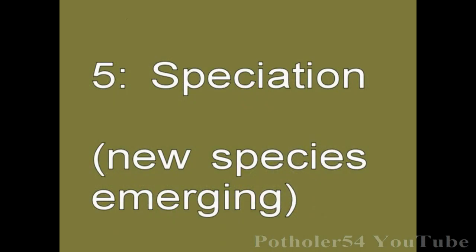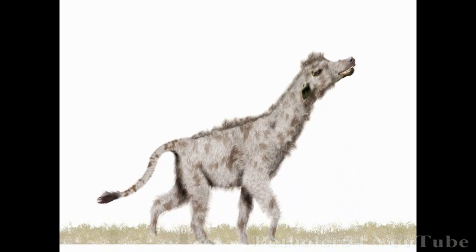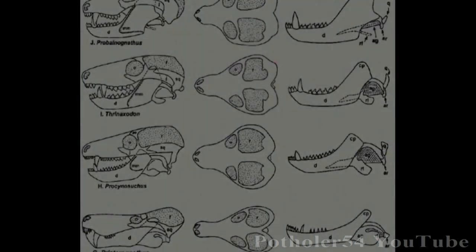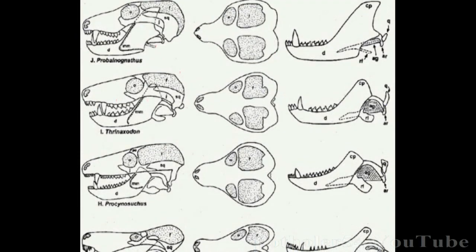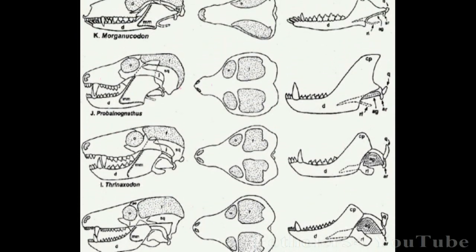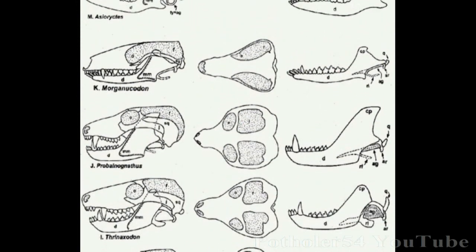In the video on natural selection, I showed how a hypothetical animal might evolve into two different species. At first, the two types would be able to reproduce, then reproduce with difficulty, and then not reproduce at all. We can't watch it happening in mammals today, because it takes several thousand generations. But we can see snapshots of it frozen in time.